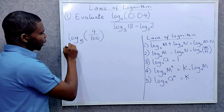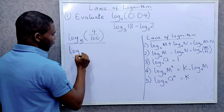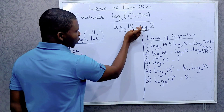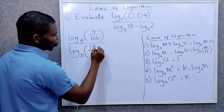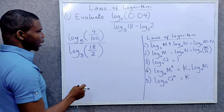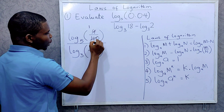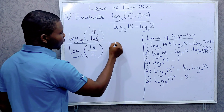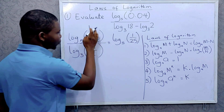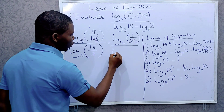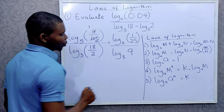This is divided by — now both log base 3 of 18 and log base 3 of 2 are in the same base and are subtracted from each other, so we simply divide the arguments. That gives us log base 3 of 18 divided by 2, which is log base 3 of 9. Now reducing 4 over 100: 4 into 4 is 1, 4 into 100 is 25, so we have log base 5 of 1 over 25, divided by log base 3 of 9.